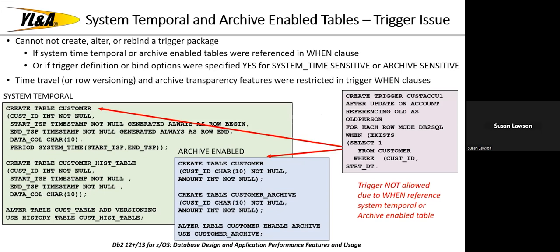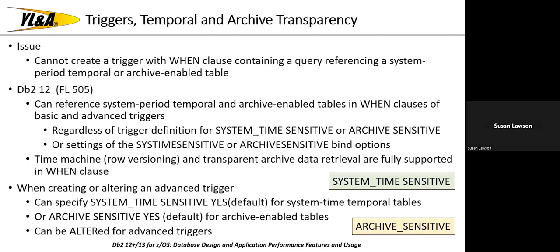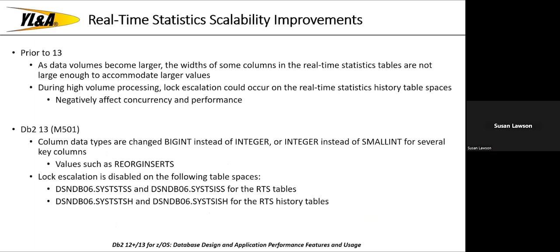System temporal tables and archive-enabled tables had a limitation: you could not have a trigger, and you couldn't reference these tables in a WHEN clause. In version 12 function level 505 that limitation was removed — you can now reference system temporal and archive-enabled tables in a trigger. For real-time statistics, data types in RTS stats have been enhanced to BIGINT to account for larger volumes — for example, REORGINSERTS is now BIGINT instead of INTEGER to accommodate billions of inserts.